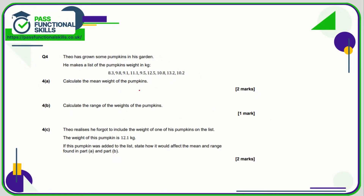Question four is a calculator question. We want the mean weight, so we add all these weights together, which gives us 94.5 kilos, and we divide by 9 values. 94.5 divided by 9 is 10.5 kilos.